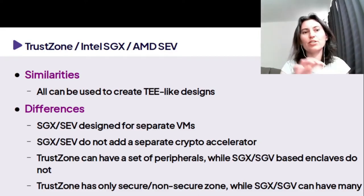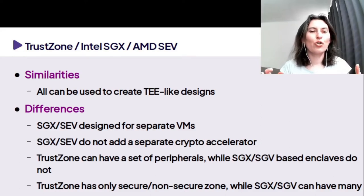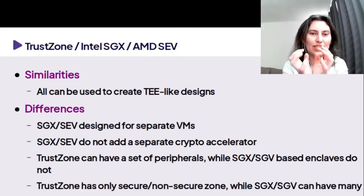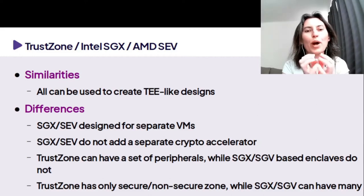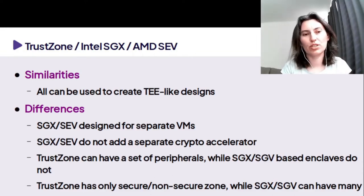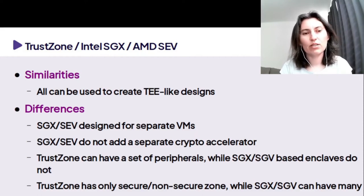Now, comparing TrustZone, SGX, and SEV: the similarity is that all of them can be used to create a TEE-like design that separates part of memory where you can run some code. But in the case of SGX and SEV, they are designed to run mostly for virtual machines and they do not have a separate crypto accelerator. In the case of TrustZone, you can access some peripherals, whereas the others have just the memory.